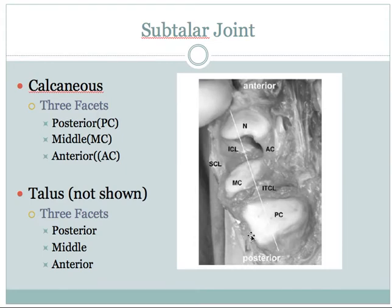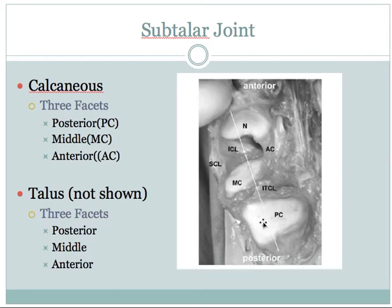We see the posterior facet on top of the calcaneus, a middle facet, and a really tiny anterior facet. The talus has corresponding facets that sit on top of each one of those calcaneal facets. They're flat, so this is classified as a sliding gliding joint, but there is one axis of motion — we'll talk more about that in a minute.